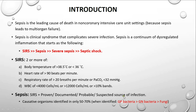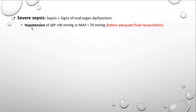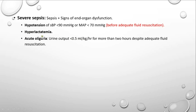If we have sepsis with signs of end organ dysfunction, then we have a condition called severe sepsis. Examples of end organ dysfunction include: first, hypotension with a systolic blood pressure of less than 90 or a mean arterial pressure of less than 70 before adequate fluid resuscitation; second, hyperlactatemia, which indicates vasodilation and hypoperfusion of tissues; and third, acute oliguria with a urine output of less than 0.5 mL/kg/hour.